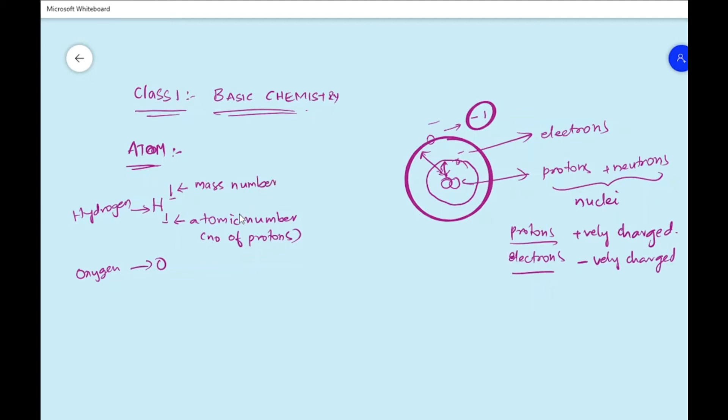The atomic number is nothing but the number of protons present in that particular atom. And this number indicates the atomic mass or mass number. This atomic mass is nothing but the sum of total protons plus neutrons. Atomic mass is the sum of protons and neutrons, whereas atomic number is just the number of protons. Similarly, for oxygen we have 8 protons and the atomic mass is 16.